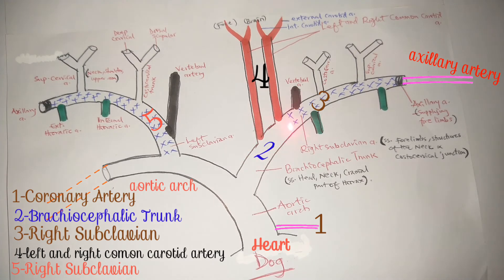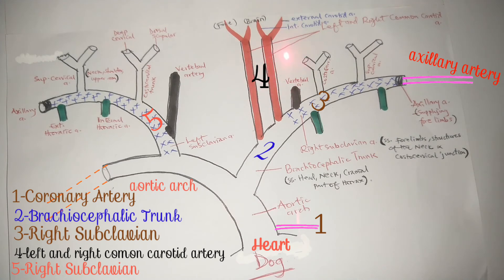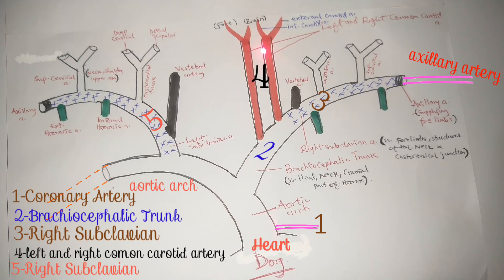In this species, before the brachiocephalic trunk gives rise to the right subclavian artery, it gives off the left and right common carotid arteries. These common carotid arteries supply the head and structures within the head.